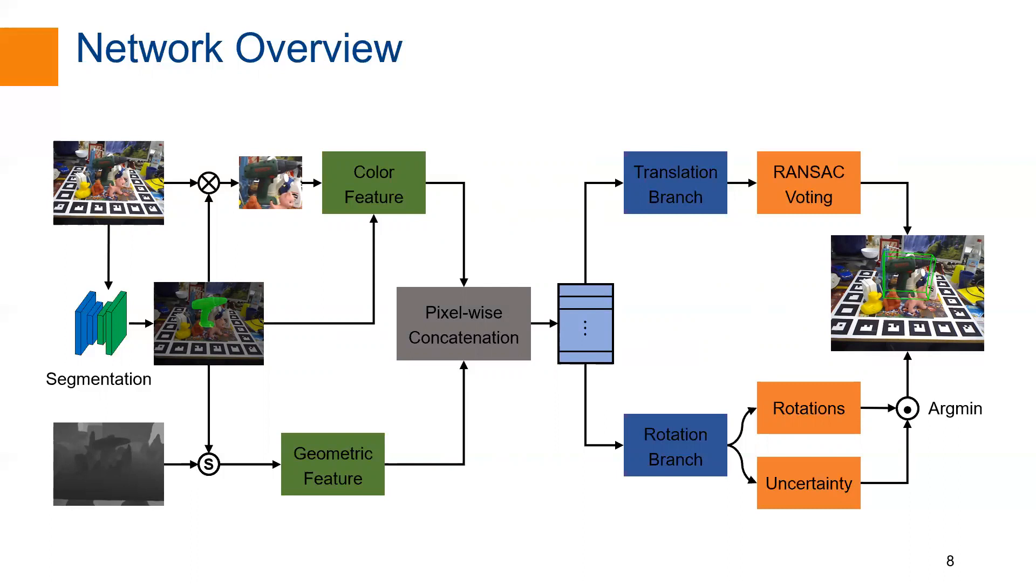A fully convolutional network is used to extract per-pixel dense color features from the input. Only those features belonging to foreground pixels are selected and lifted to higher dimensions. We use a network similar to PointNet to extract per-point geometric features. Then, the color features and geometric features are concatenated in a pixel-to-point manner.